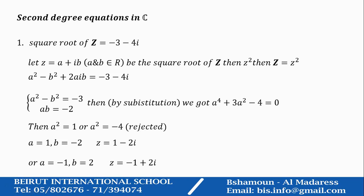So, A equals plus or minus 1. For A equals 1, B is minus 2. For A equals minus 1, B is 2. So, these complex numbers are the square root of big Z, which is minus 3 minus 4I.